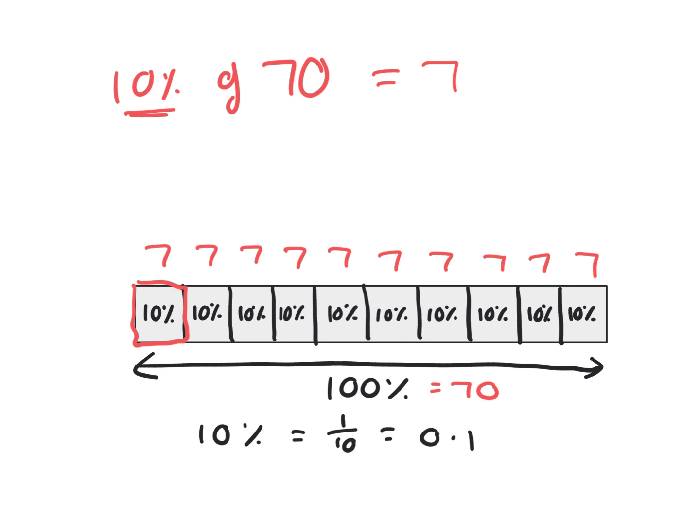Now, if we wanted to work out 20%, and don't forget, multiplying and 'of' are the same thing, so we've got 20% of 70. Again, we would break it down into 10 equal parts, so each 10% is worth 7. This time we'd actually need two of them to make the 20%. Therefore, the answer would be 7 add 7, which would be 14.